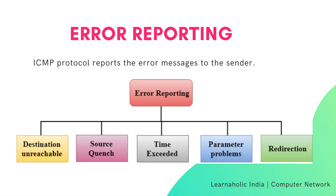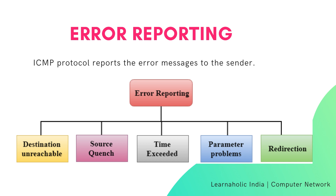ICMP protocol reports error messages to the sender. There are five types of errors handled by the ICMP protocol: first is destination unreachable, second is source quench, third is time exceeded, fourth is parameter problems, and fifth is redirection. We will see each and every error one by one.